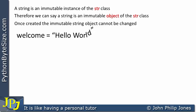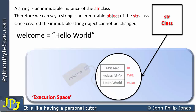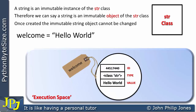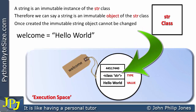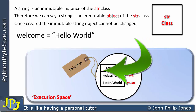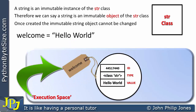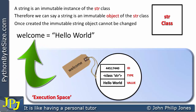Let's consider the following program statement: welcome is assigned the value 'hello world'. If we consider this mapped onto the execution space, from the string class we have an object being created. This object will be given an ID, a type, and a value — and the value has clearly come from 'hello world'. We then label this particular object with 'welcome'.